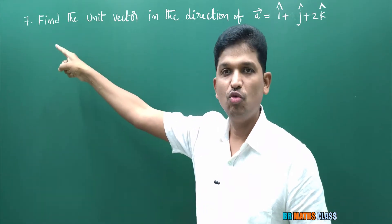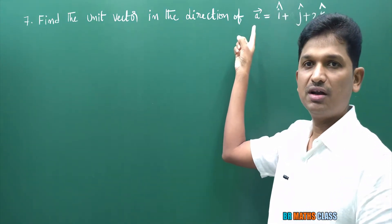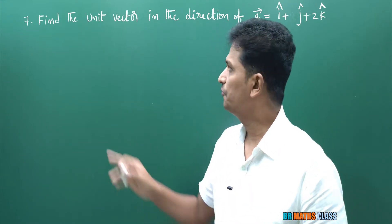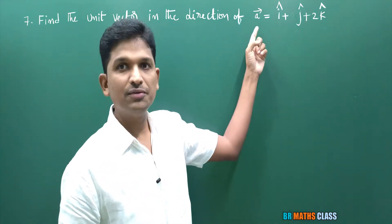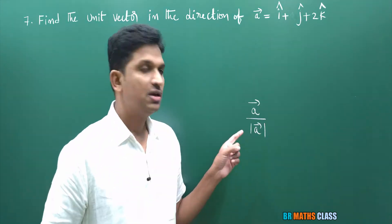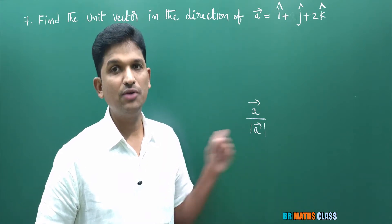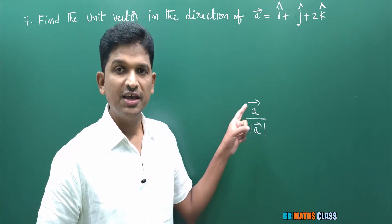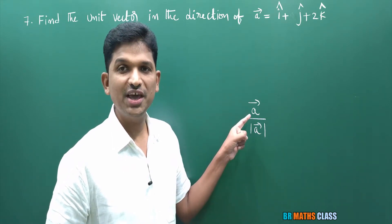In question number 7, they ask: find the unit vector in the direction of a⃗. Two things you need to observe — first, unit vector, and that unit vector is in the direction of vector a⃗. While learning the definition of unit vector, you learn this point: a⃗ divided by magnitude of a⃗ is a unit vector in the direction of a⃗.